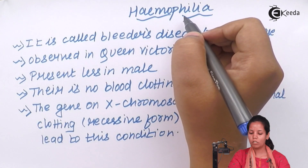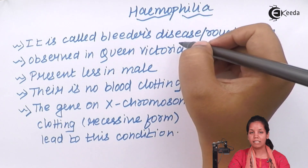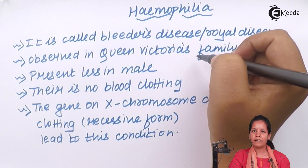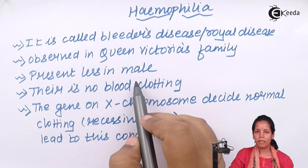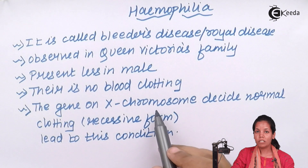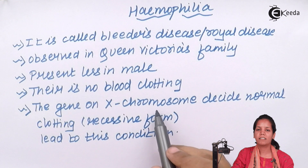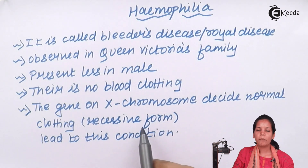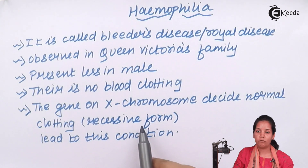Hemophilia is also called bleeders disease or royal disease since it runs in Queen Victoria's family. It is less observed as an inherited trait in males since the genes are present on the X chromosome. Hemophilia is caused when there is no blood clotting factor present inside your body, and since there is no clotting factor, a slight cut could result in the death of the individual. The genes present on the X chromosome are normal genes that decide to form your clotting factor, but their recessive form may lead to this condition.